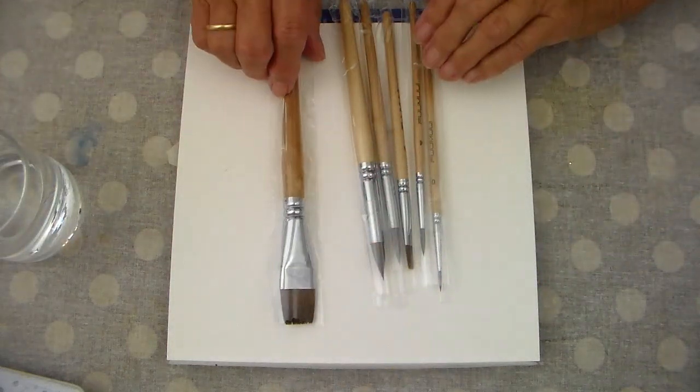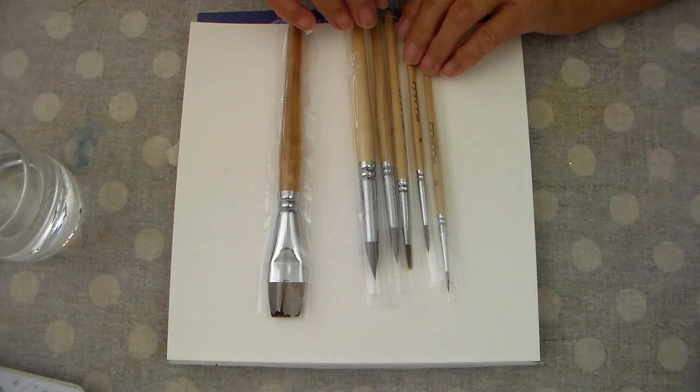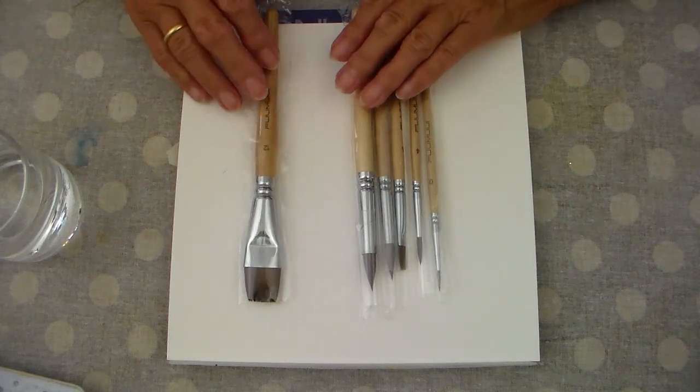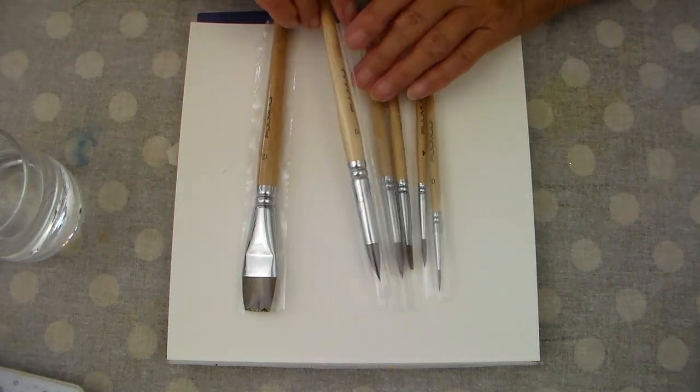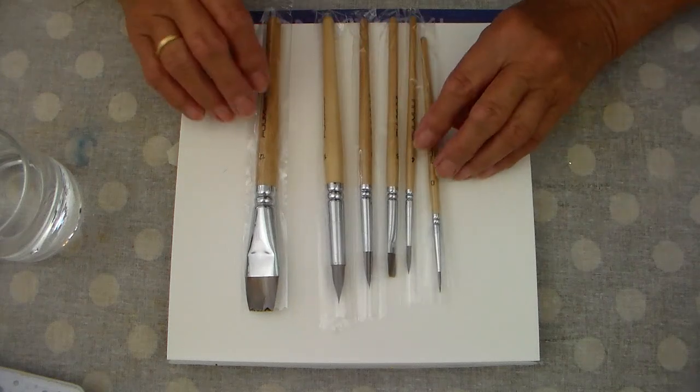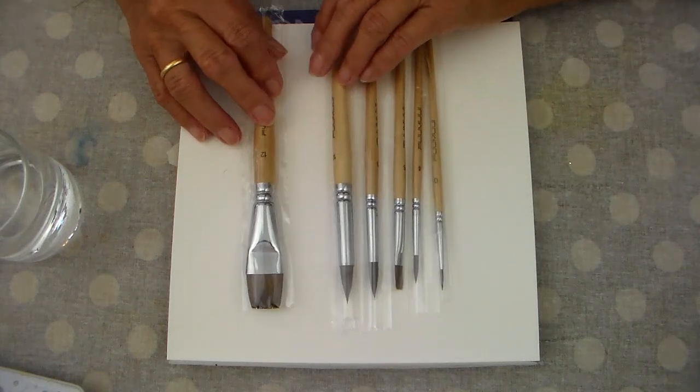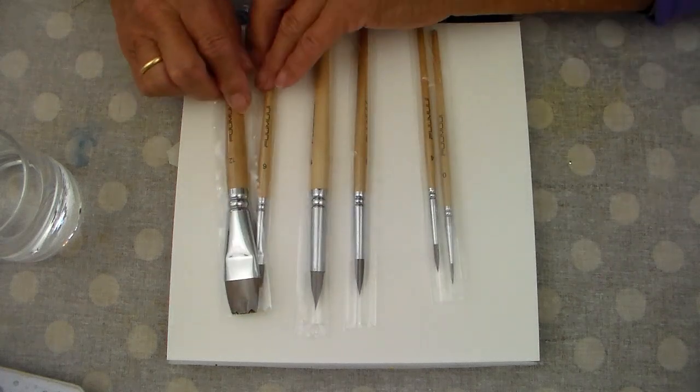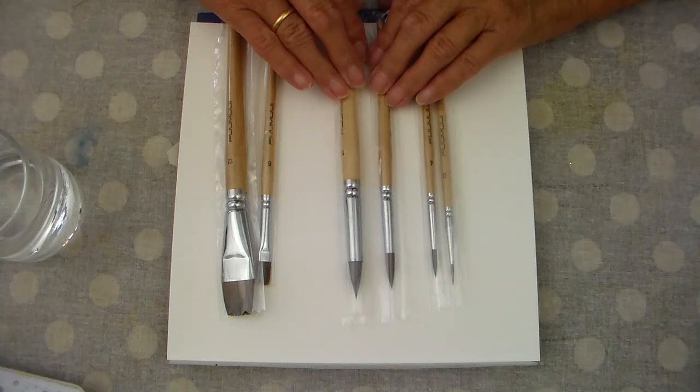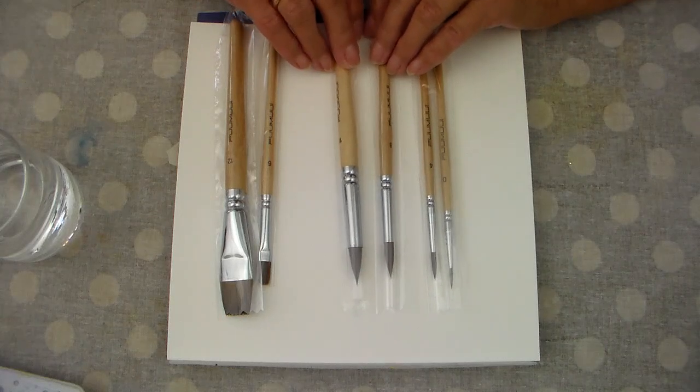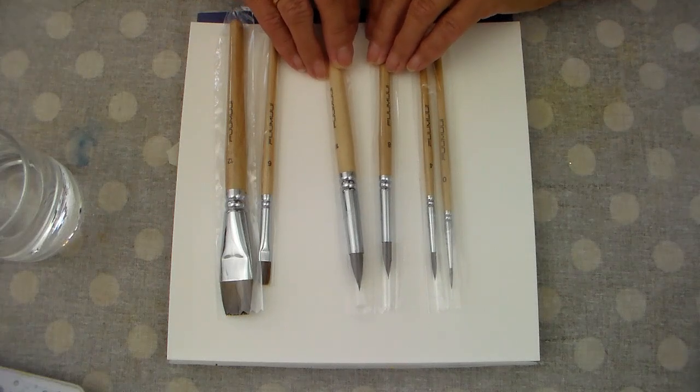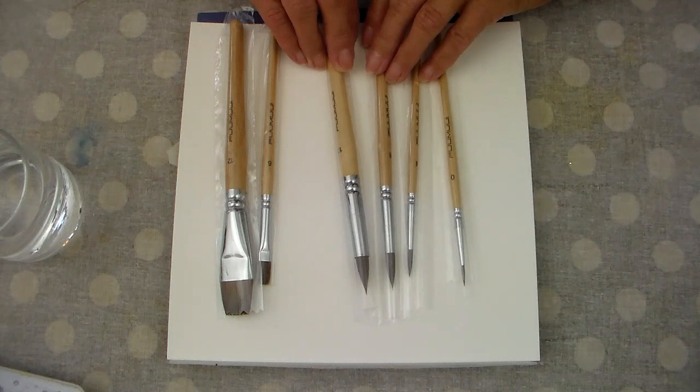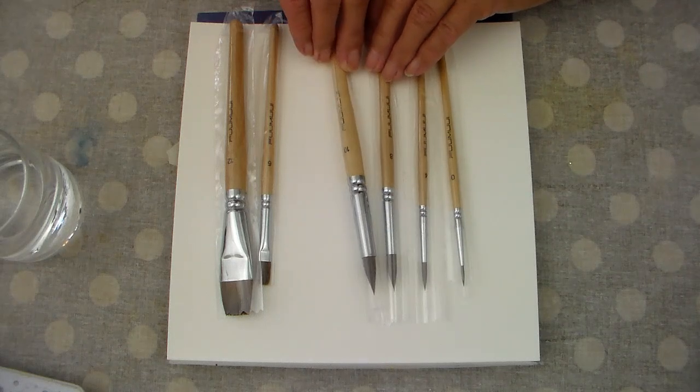These are for a travel set. Foo-ee-moo-ee, forgive me. So what do we have? Well, they have given me a number 12 flat, a number 6 flat and some rounds with very good points. In fact the last brushes they gave me had excellent points. A 0, a 4, an 8 and a 10.